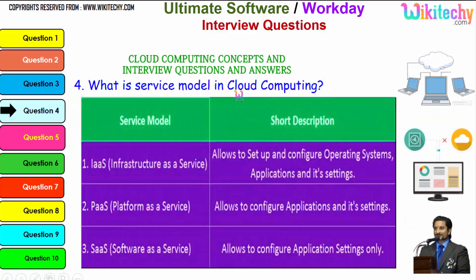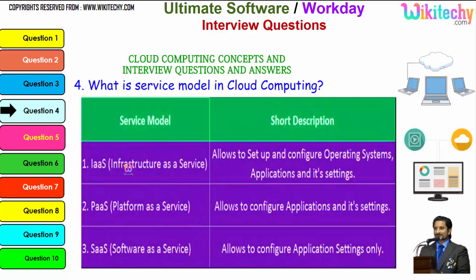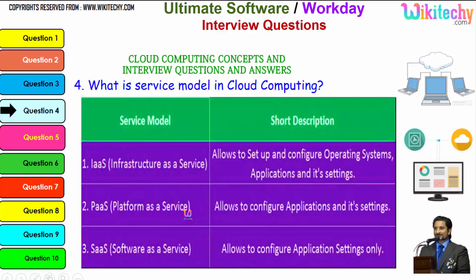The question is: what is the service model in cloud computing? The three major service models are: first, Infrastructure as a Service, which allows you to set up and configure the operating system, applications, and settings — you are given a server and you can install any operating system you want. Second, Platform as a Service — you are allocated a specified operating system and can install any applications and settings. Third, Software as a Service — you can configure whatever application settings you want.